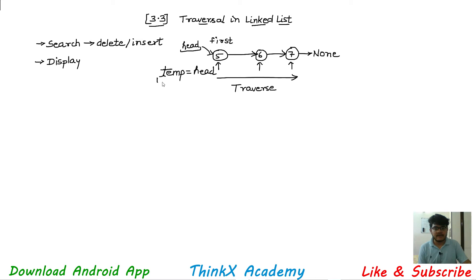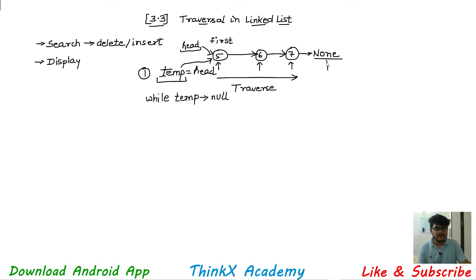We can update this value of temp by reaching each and every element, so the head pointer will not get changed. The first step is to assign a temporary pointer pointing to the head. Remember, head is pointing to the first node, so when we write temp equals head, temp is also pointing to the first node. Now we will run a while loop until the value of temp reaches null.